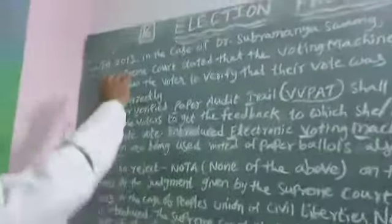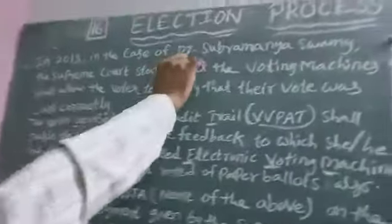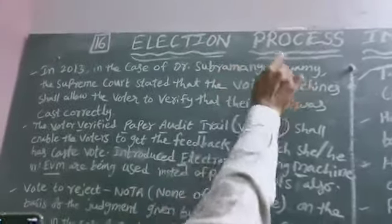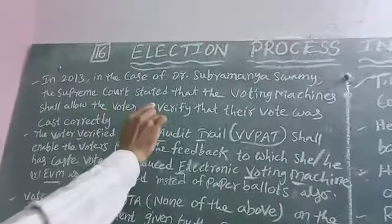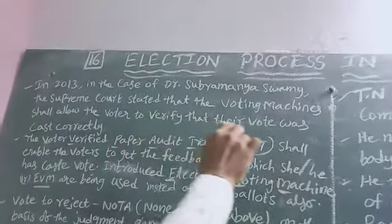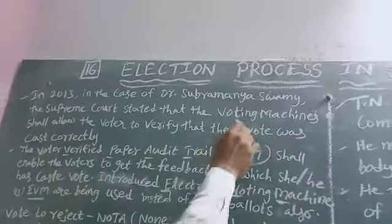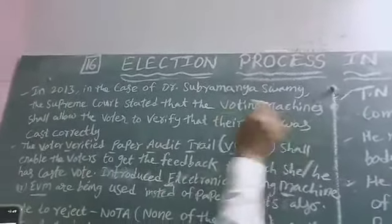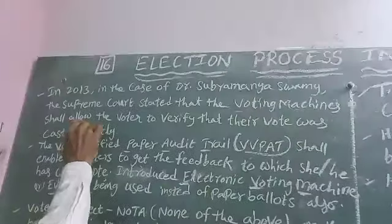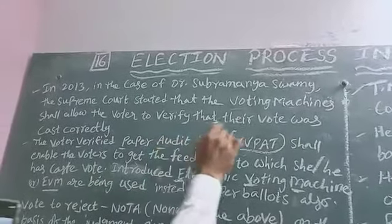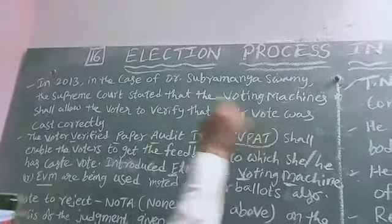Quasi-judicial functions of the Commission. Next, in 2013, the Supreme Court stated that voting machines — EVMs — shall allow all voters to verify the vote which he or she has cast.